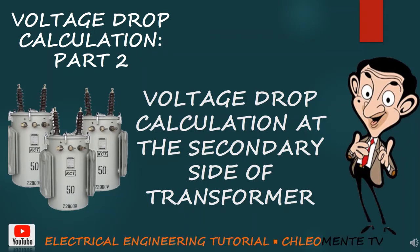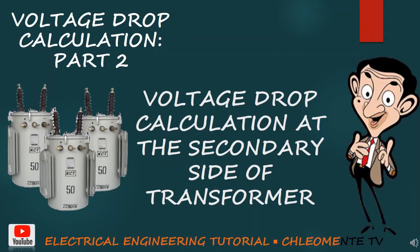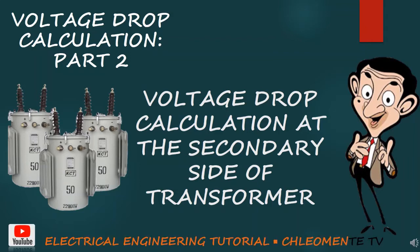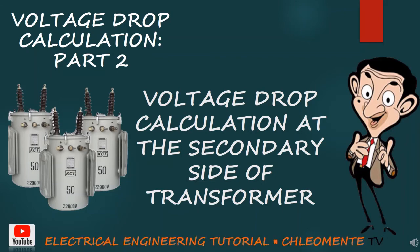Voltage drop calculation at the secondary side of transformer. Voltage drop affects the performance of the electrical system. Higher voltage drop leads to low voltage received by the loads. Due to the presence of internal resistance and reactance of the transformer, it drops the voltage in its secondary terminal. In this presentation, we will learn how to calculate the voltage drop in the secondary side of the transformer.